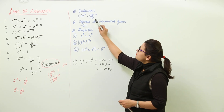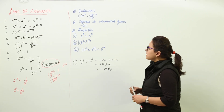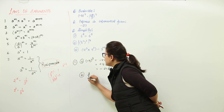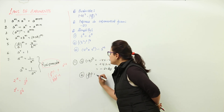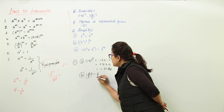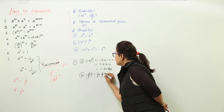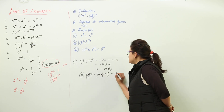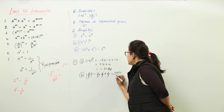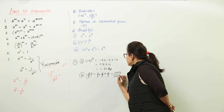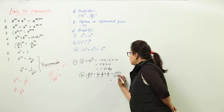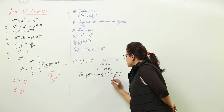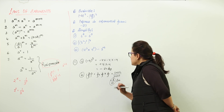Next we have 2 by 3 raised to power 3. We will do it as 2 upon 3 raised to power 3, which can be done as 2 by 3 multiplied with itself 3 times. So 2 into 2 into 2 divided by 3 into 3 into 3. We get 2 twos are 4, 4 twos are 8, upon 3 threes are 9, 9 threes are 27. So 8 by 27 is the answer.